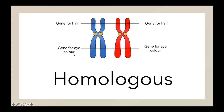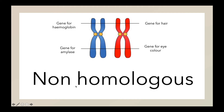This, however, is a non-homologous chromosome. Although both have similar structure, they do not possess similar gene content. For example, at this location, this chromosome has the gene for hemoglobin, meanwhile at the same location, this chromosome possesses the gene for hair.